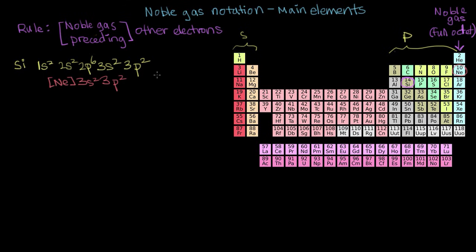So if we compare these two ways of writing our electron configuration, you can see that these electrons right here, so everything up to 3s2, 3p2, that gives us the electron configuration for neon. And so we don't have to write that, we just write neon and assume that whoever's reading it knows what the electron configuration for neon is.